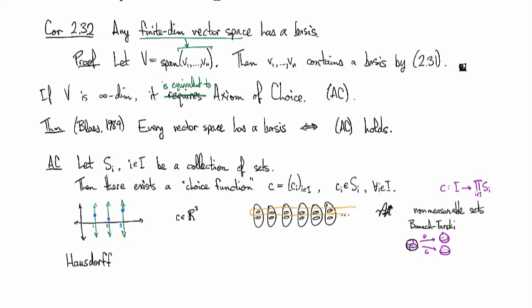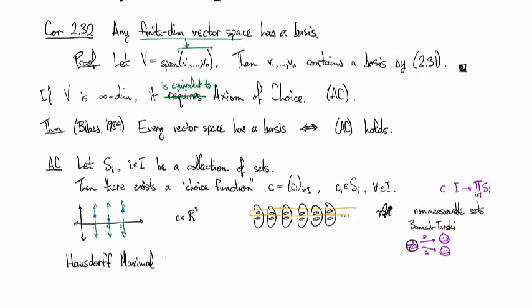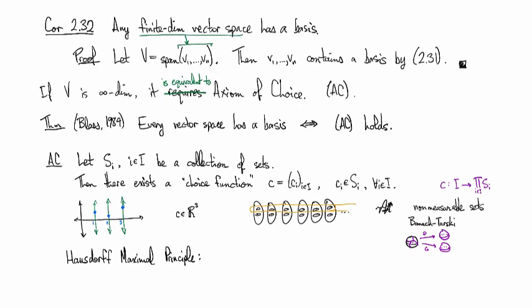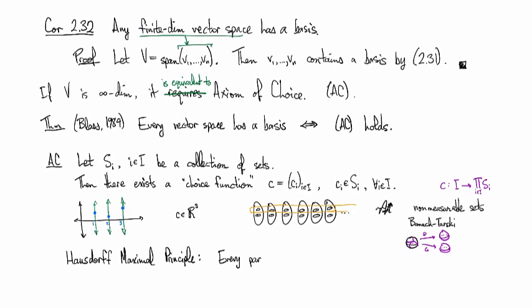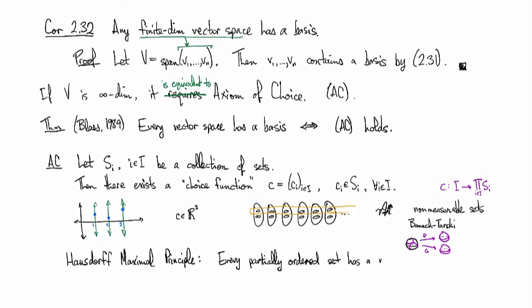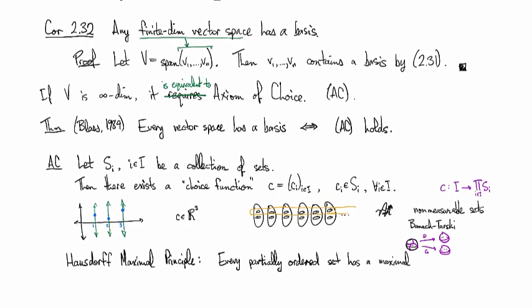One of the most popular is the Hausdorff maximal principle, and in this one it says that every partially ordered set has a maximal totally ordered subset.